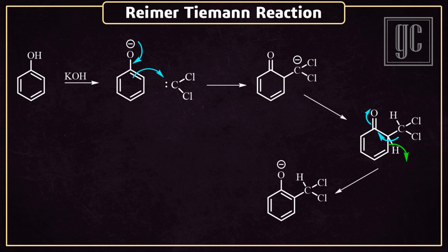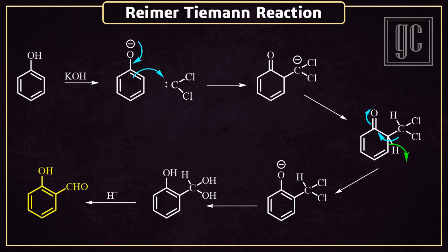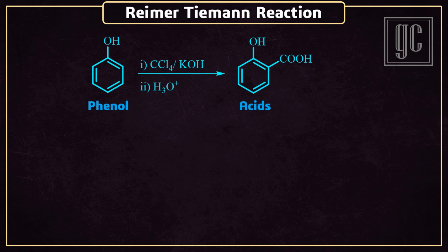Aromaticity is retained in the ring. Now this intermediate is treated with acid, and under acidic conditions both chlorine atoms are replaced by hydroxyl groups. Because a single carbon cannot carry two hydroxyl groups, one water molecule is removed from the molecule, and the final product — ortho-aldehydes — is formed.